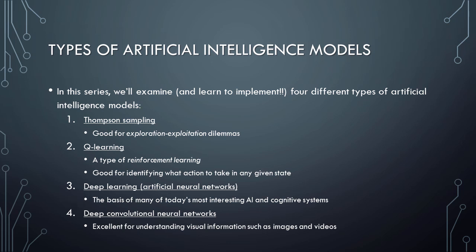Finally, we'll learn about deep convolutional neural networks. Convolutional networks learn by using a specialized type of mathematical operation called convolution. Convolutional neural networks have proven themselves to be excellent tools for understanding visual information such as images and videos.